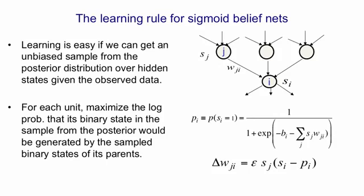So to summarize, if we have an assignment of binary states to all the hidden nodes, then it's easy to do maximum likelihood learning in our typical stochastic way, where we sample from the posterior and then we update the weights based on that sample, and we average that update over a mini batch of samples.